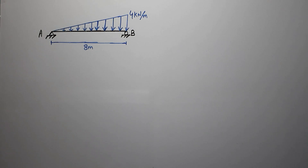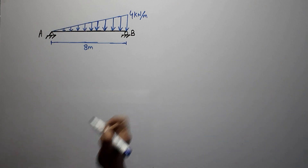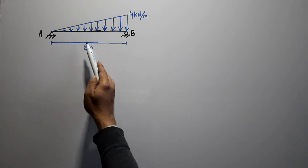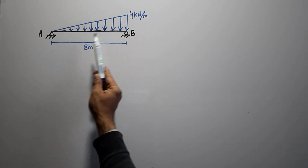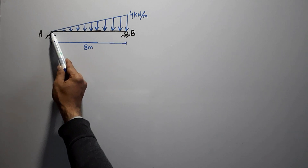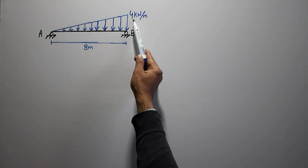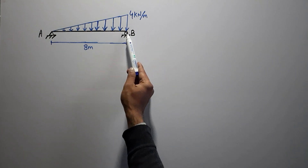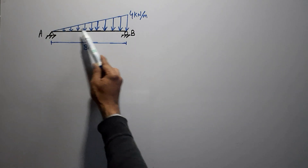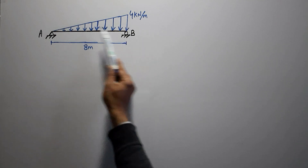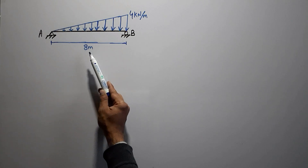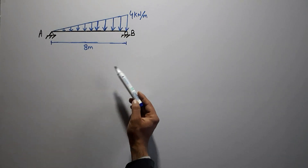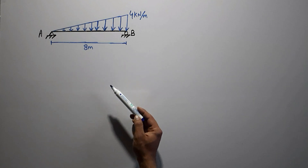Welcome to the civil engineering YouTube channel. In today's lecture we are going to analyze a beam loaded with a uniformly varying load — a triangular load. The load starts with zero magnitude from the hinge support and ends with 4 kN/m at the other support. The beam length is 8 meters. We need to find the support reactions and then draw the shear force diagram.